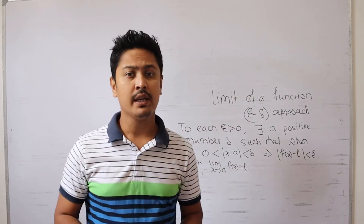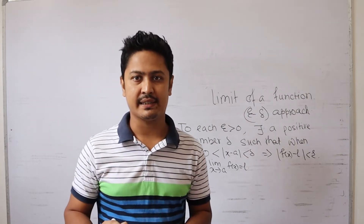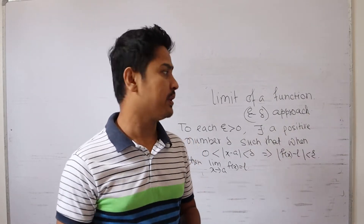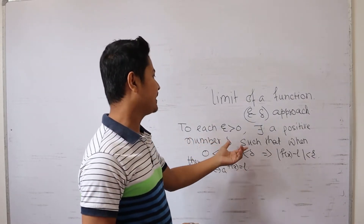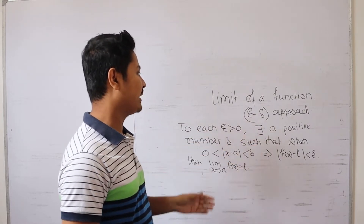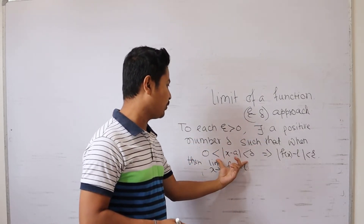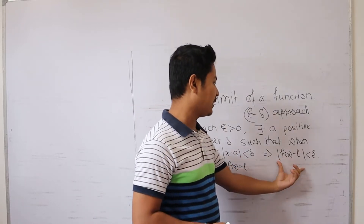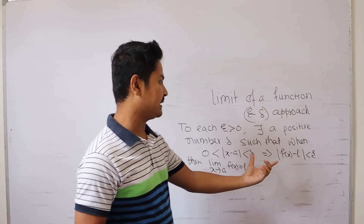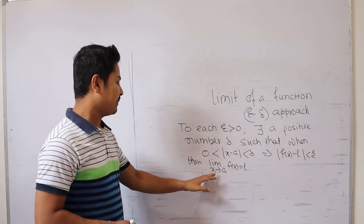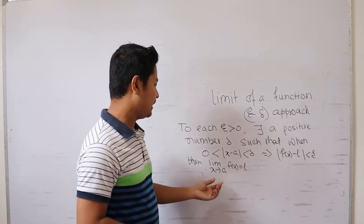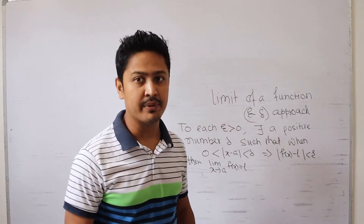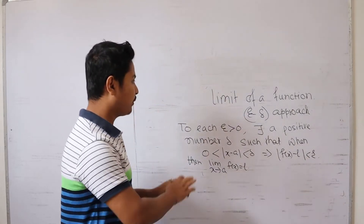This is a statement that we have to imply. That means, if we have epsilon greater than 0 — a given epsilon — we have to show that mod of f of x minus l is less than epsilon. So we can say the limit of a function equals l. That is, when x approaches to a, the function approaches to a particular real number l.